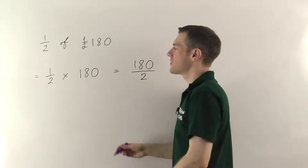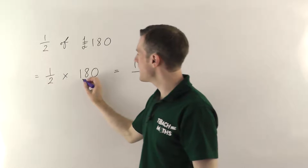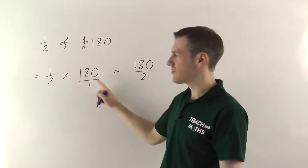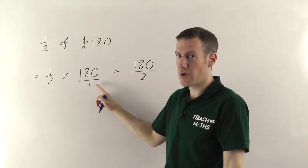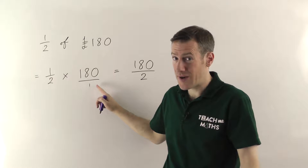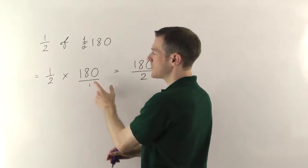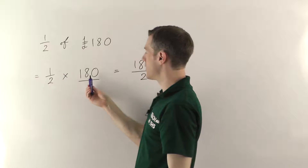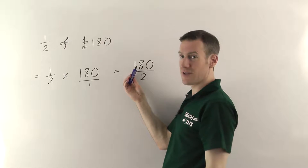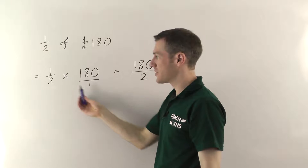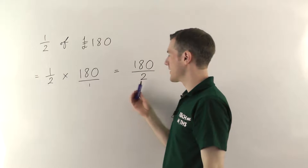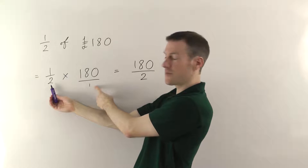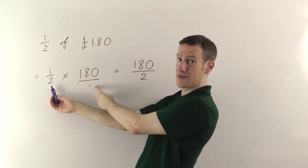This is because you can put an imaginary 'divided by 1' underneath the whole number. 180 divided by 1 is still 180, so we haven't changed anything. That means we can multiply the fractions: you just multiply the tops — 1 times 180 is 180 — and then you multiply the bottoms — 2 times 1 gives you 2. Because of the divide by 1, this bottom number will never change.